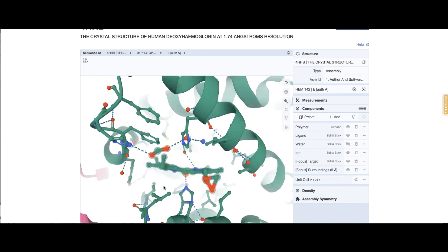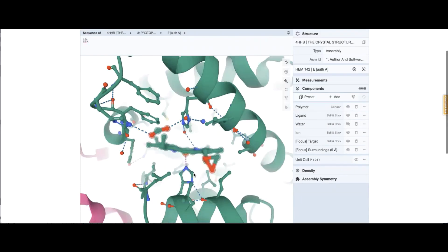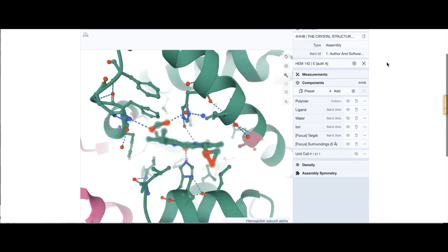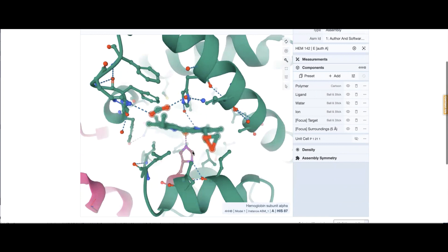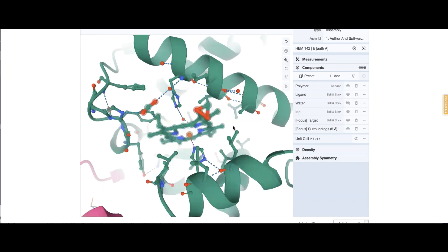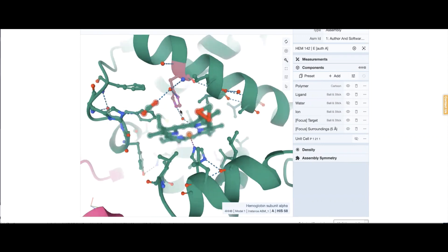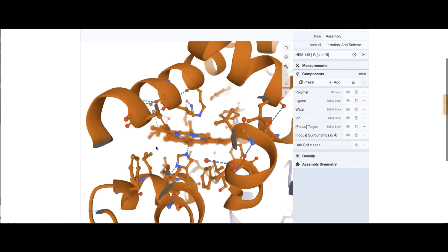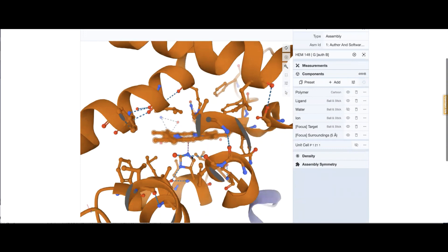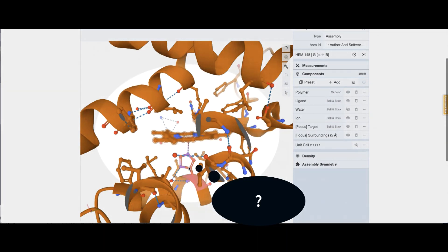And so once you're here, you can mouse over the residues shown and see this histidine 87 is forming a coordinate bond with the iron in the heme. And there's another histidine here, but that's the distal histidine. For practice, try to find the histidine that coordinates the heme bound to chain B.